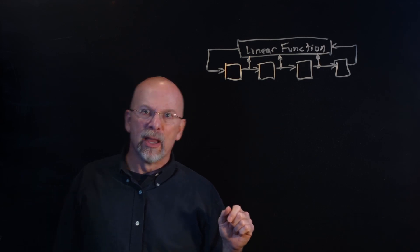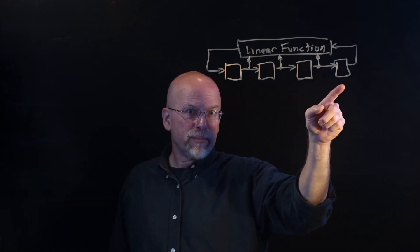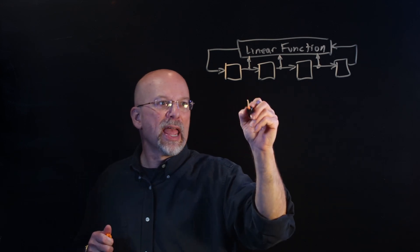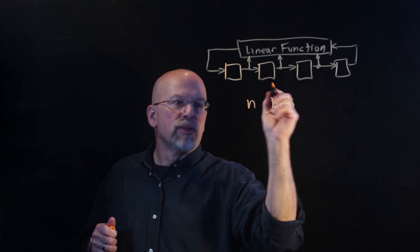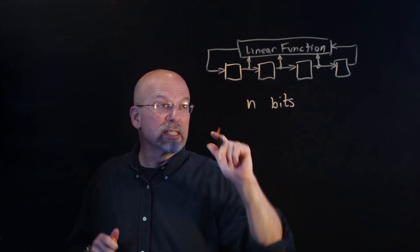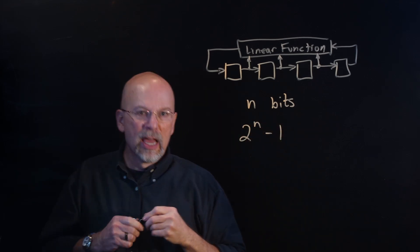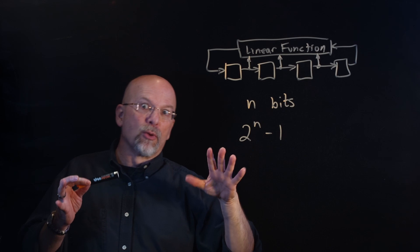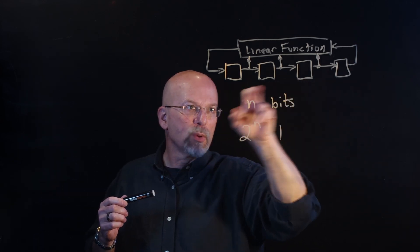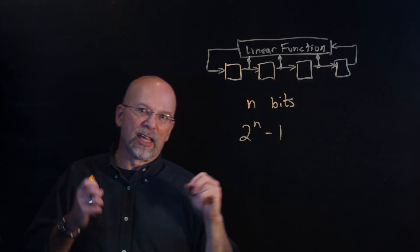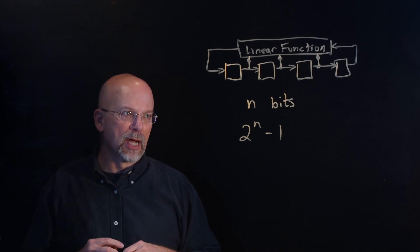They got shifted one position to the right. And then the taps, we took these taps, these measurements or values at the intermediate positions in this shift register, did an exclusive OR operation on them to combine them and brought them back around. If we properly designed that linear function, then based on the number of bits here, for example, if there were n bits, then a properly designed linear function would take 2 to the n minus 1 to get all the way back around.